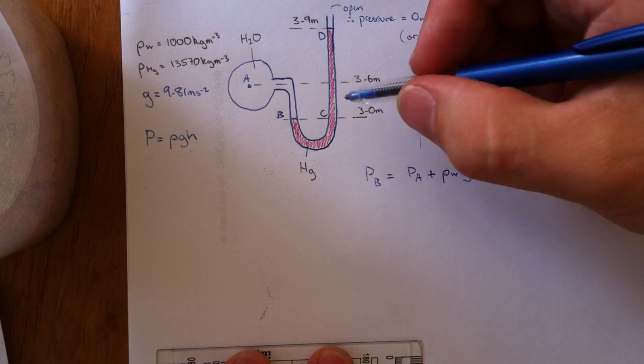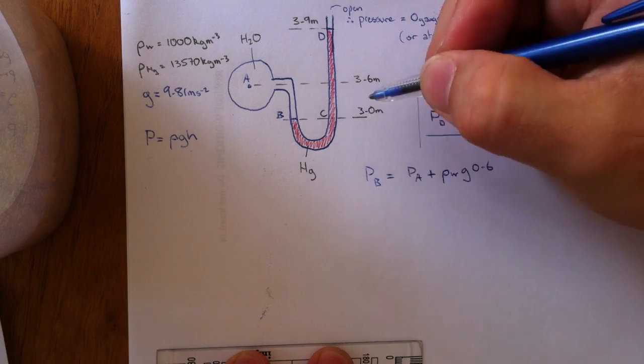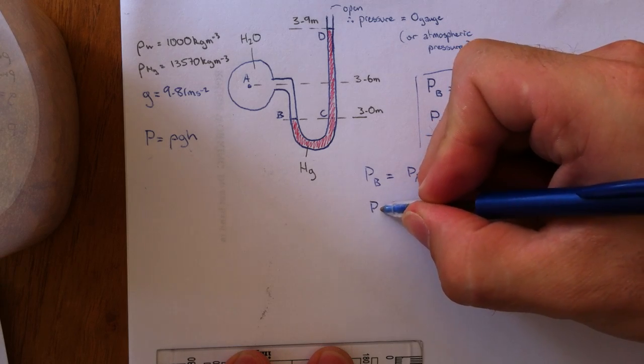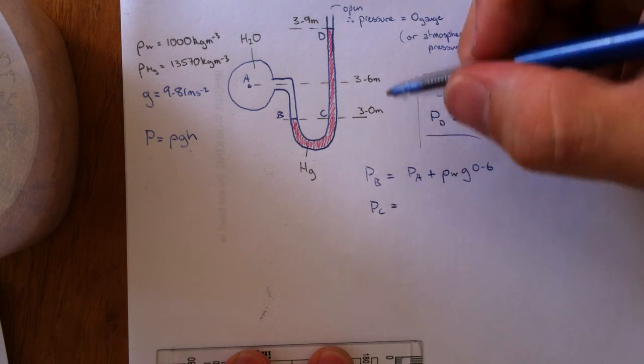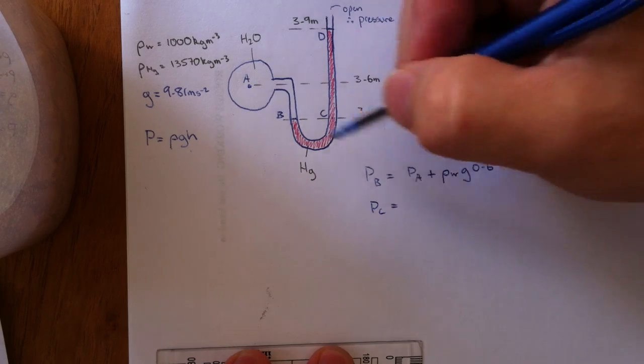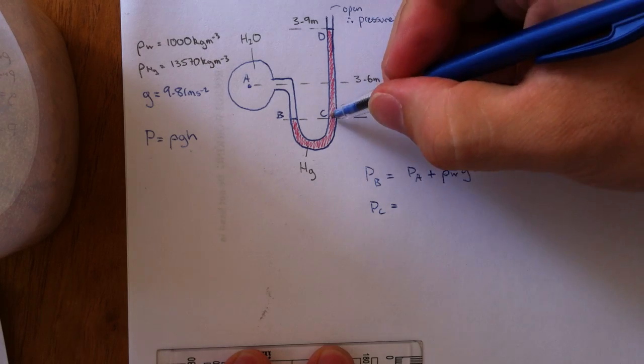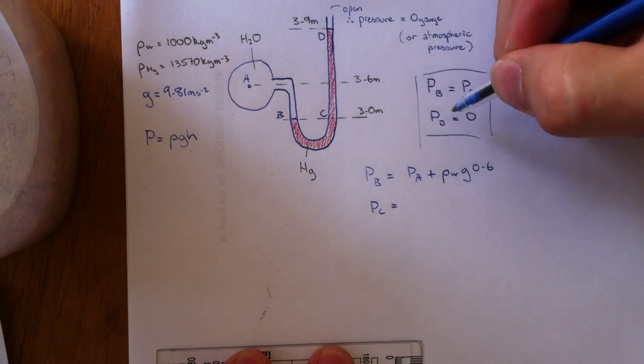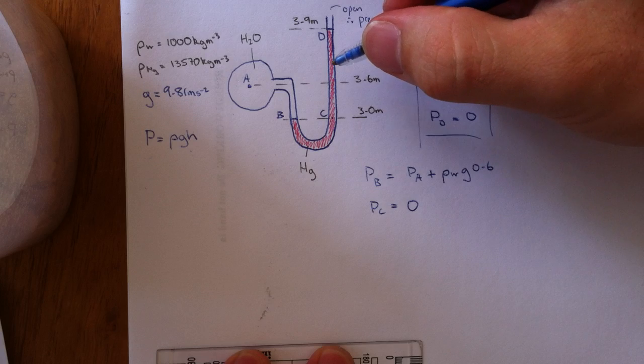And what we also want is pressure at C. I know we've said already that pressure at B equals pressure at C but we'll call it pressure at C for now. Now the pressure at C, using the same principles we just used here, equals pressure at point D which is 0.